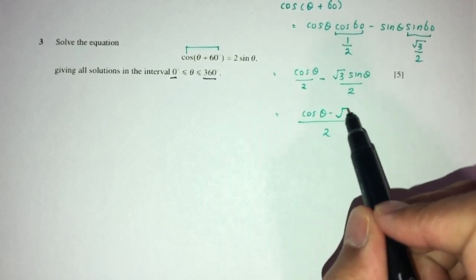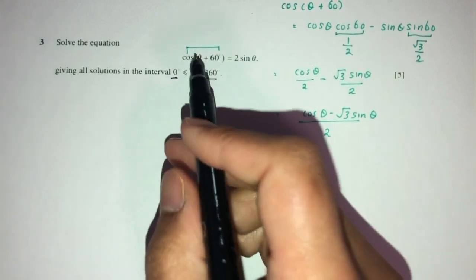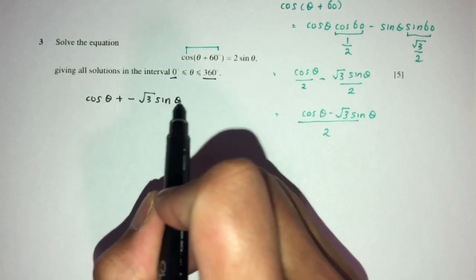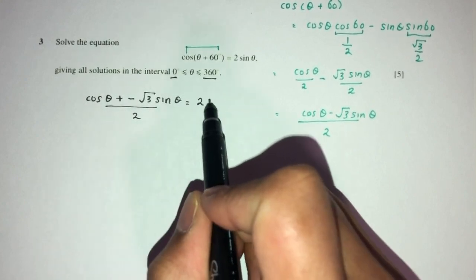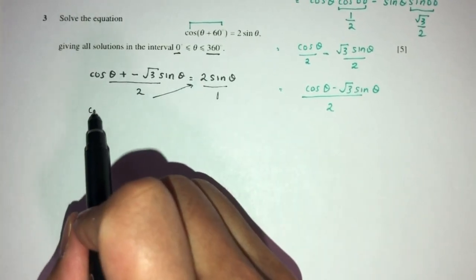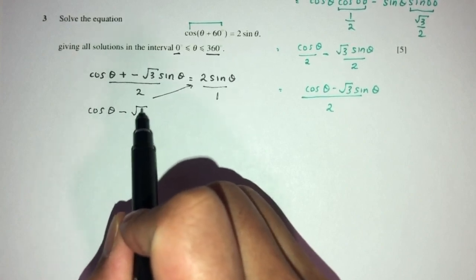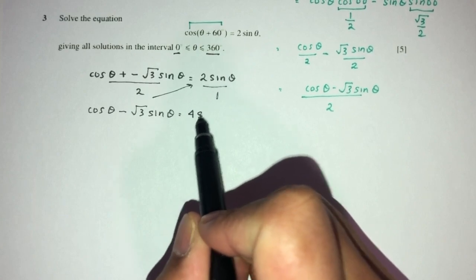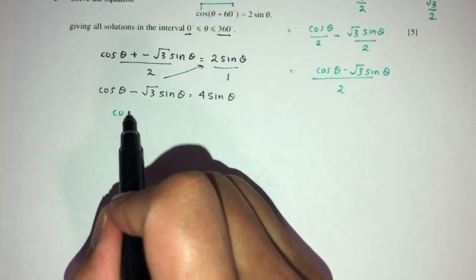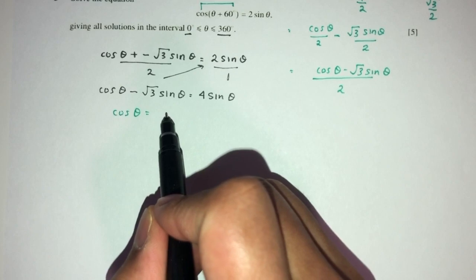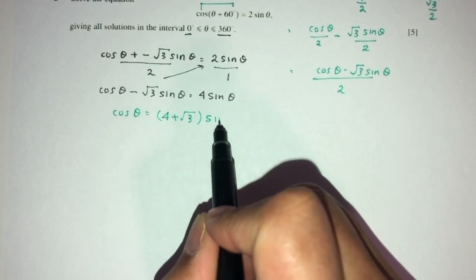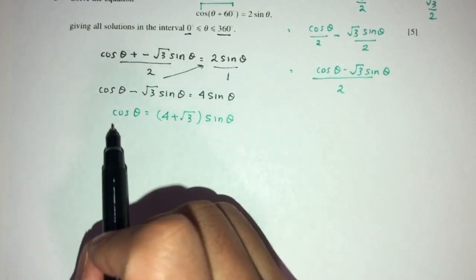Combining the terms gives (cos θ minus root 3 sin θ) over 2. Substituting back into the equation and cross-multiplying: cos θ minus root 3 sin θ equals 4 sin θ. Sending the sin θ terms to one side: cos θ equals 4 sin θ plus root 3 sin θ, which gives cos θ equals (4 plus root 3) sin θ.